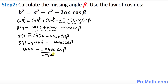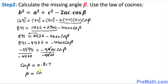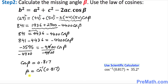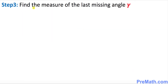Dividing both sides by −4400, these cancel each other out, giving cos(beta) = 0.817. Therefore beta = cos⁻¹(0.817), which turns out to be approximately 35.2 degrees. That is our beta value.